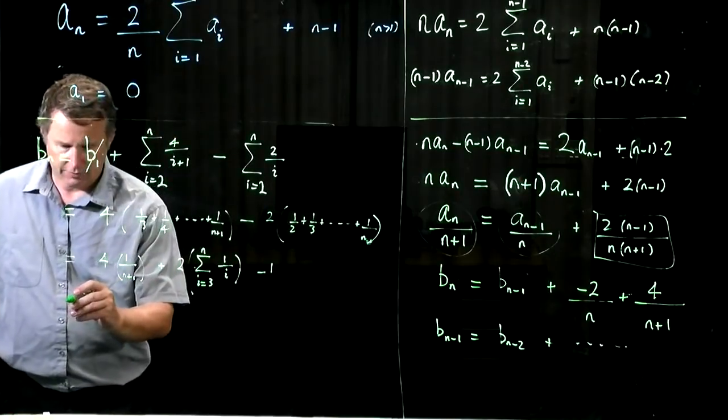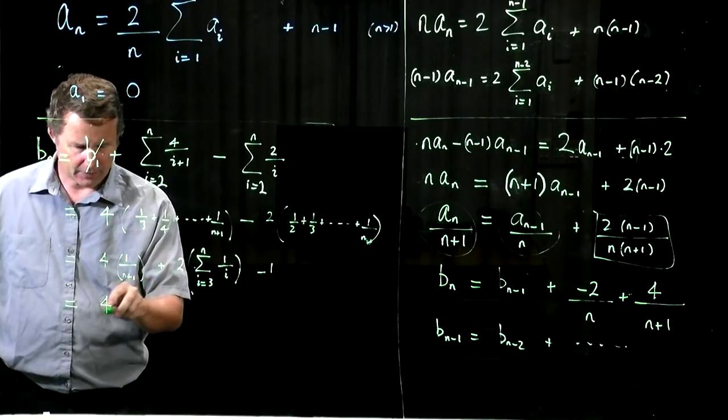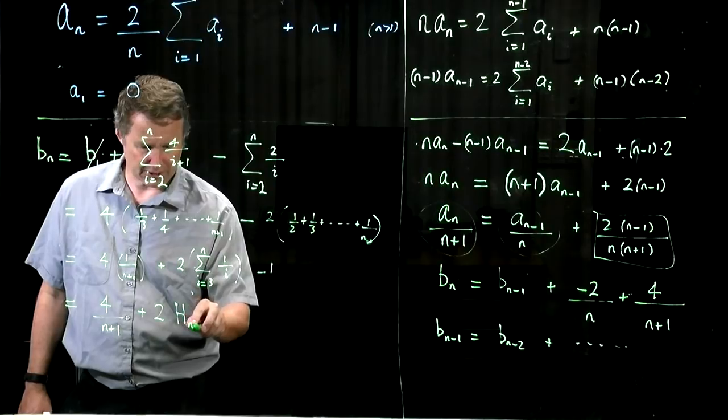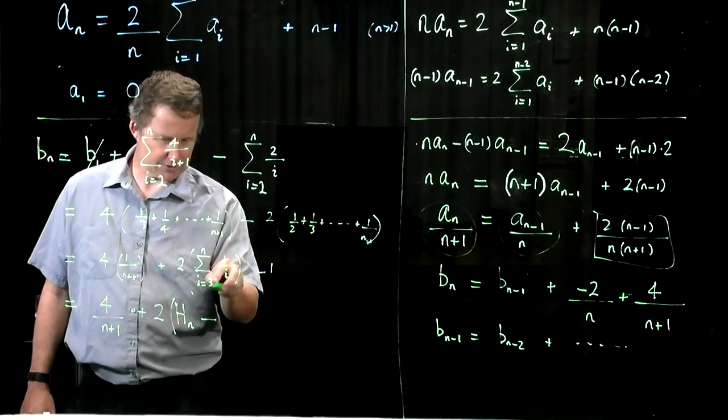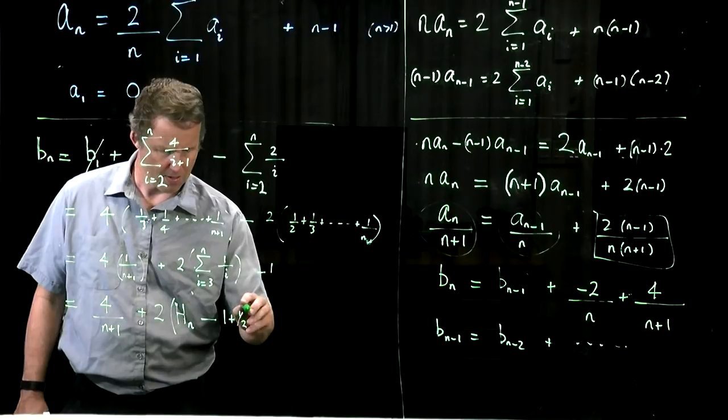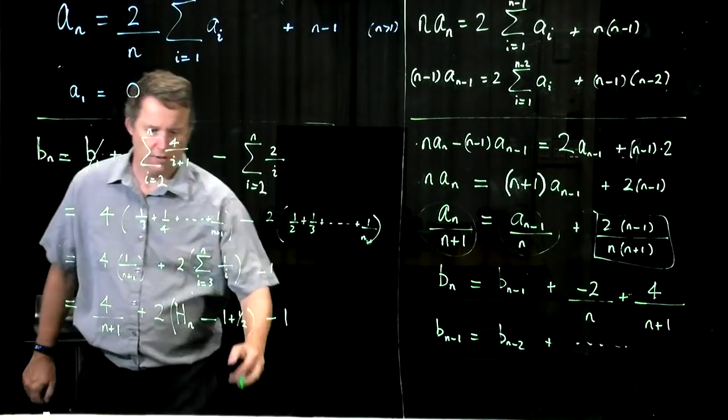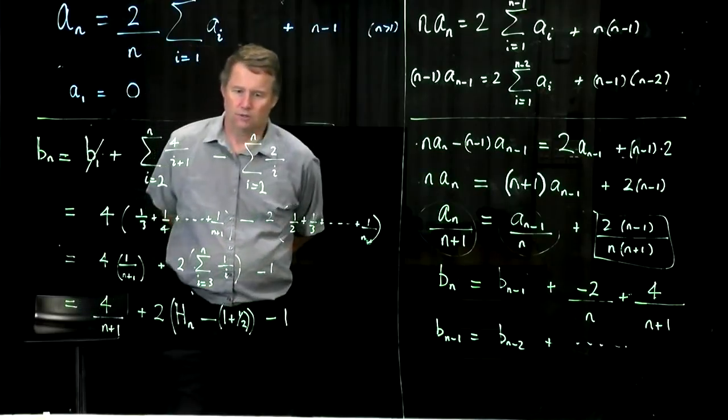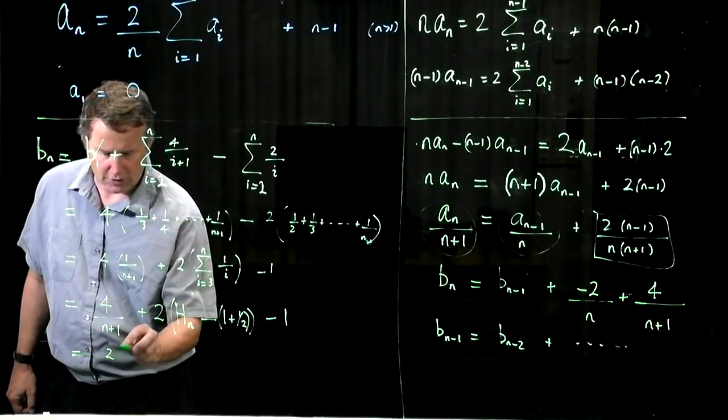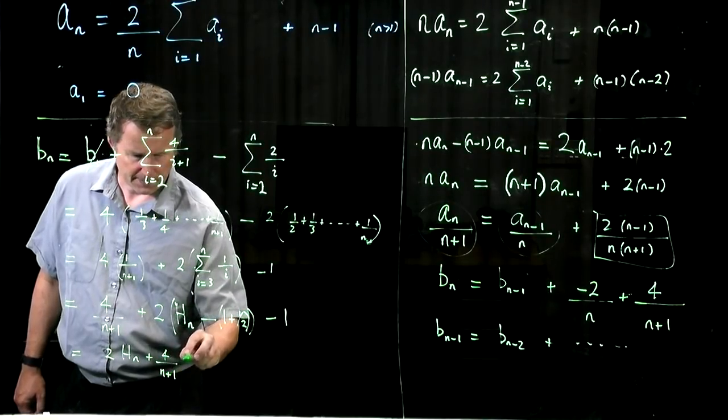Now if we remember the harmonic number which is the sum from 1 to n of 1 over i, we can write this as follows. That's the harmonic number hn minus the first two terms so it's 1 plus 1 half, and then I get the minus 1. So we have taken away the first two terms and so that equals 2 times hn plus 4 over n plus 1 minus 4.